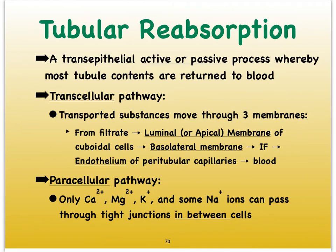In the kidneys, the water and the solutes — especially the solutes present in the filtrate — almost all get returned in the proximal convoluted tubule. This occurs by the solutes and water passing through the epithelial cells to eventually reach the blood.